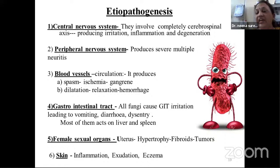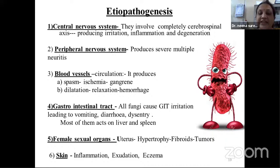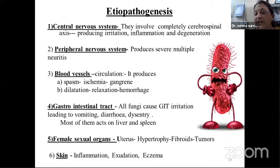Fourth ietiopathogenesis: gastrointestinal tract affection causing GIT irritation leading to vomiting, upper and lower GIT affection — vomiting, diarrhea, dysentery — even affection on liver and spleen. It is a number one remedy for malaria and jaundice. Fifth, affection on female sexual organs: the uterus is the site of affection with hypertrophy, fibroids, and tumors — also number one remedy for these. Sixth, affection on the skin with inflammation, exudation — number one remedy for eczema.